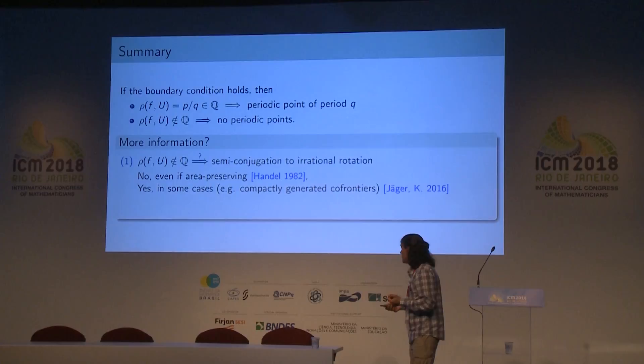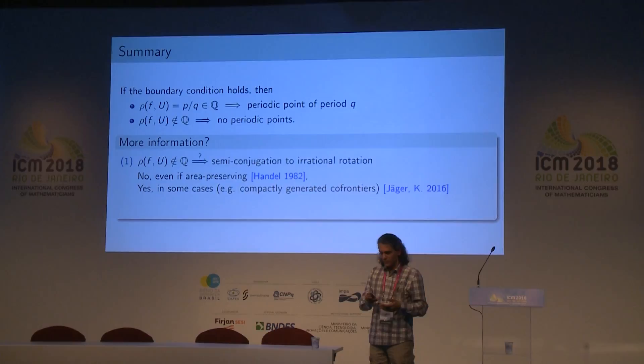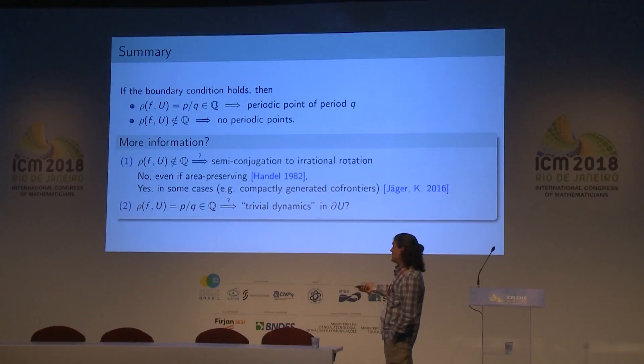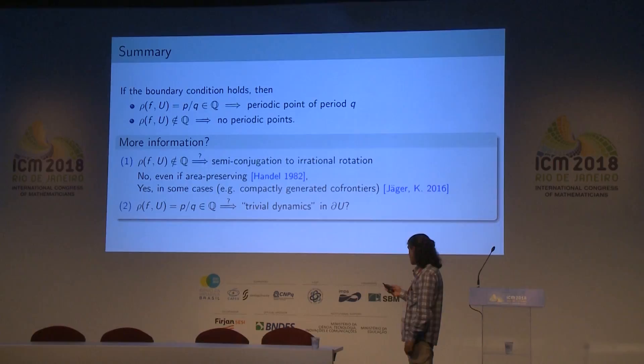If you impose some relatively mild topological conditions on the boundary, you can obtain results. For instance, in a joint work with Tobias Jäger on compactly generated frontiers, the story is much nicer — it works exactly like in the circle case. Regarding the rational case: in the model case, we knew that when the rotation number is rational, the dynamics in the boundary is trivial — everything goes from periodic points to periodic points, and all periodic points have the same period. Does this hold for general boundaries?